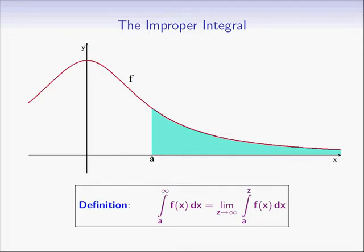The integral from a to infinity of f(x) dx equals the limit as z goes to infinity of the integral from a to z of f(x) dx. The integral from a to infinity is called an improper integral. To compute it, we first compute the integral from a to z and then take the limit as z goes to infinity.